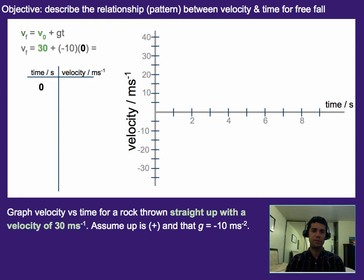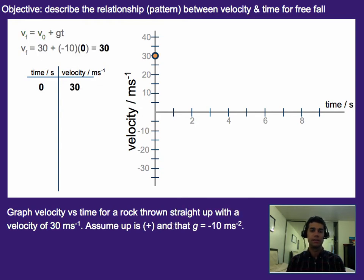At time of zero, the velocity is going to be 30. And we can see that by plugging into these values here, where our time goes in right here, our initial velocity is right there, and it comes out to a value of 30.